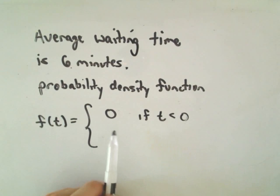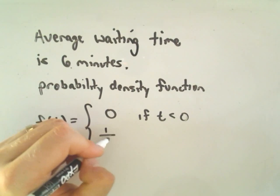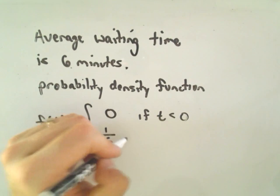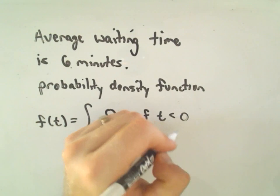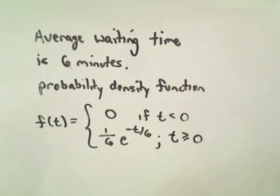The probability of your call somehow getting answered in less than zero seconds is zero. You haven't made the phone call yet. But again, associated with this scenario is going to be an exponential function that looks like one-sixth e to the negative t over six. And this is going to be if t is greater than or equal to zero.